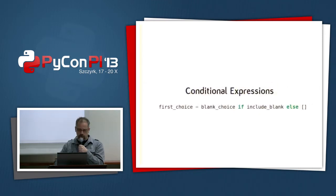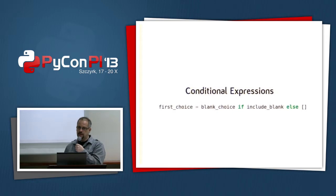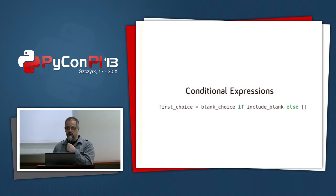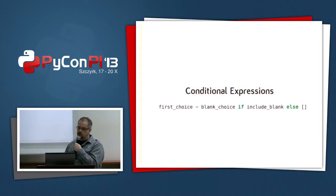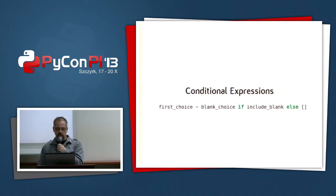That's why, after much nagging, Guido accepted conditional expressions in Python 2.5. Even though he apparently didn't really like the syntax of one-line conditionals, people would use the sneaky and/or trick anyway. With the proper conditional: 'first_choice = blank_choice if include_blank else []', it does not matter whether blank_choice evaluates to false or not.